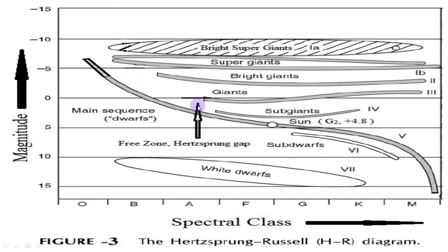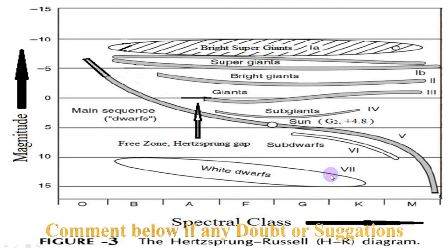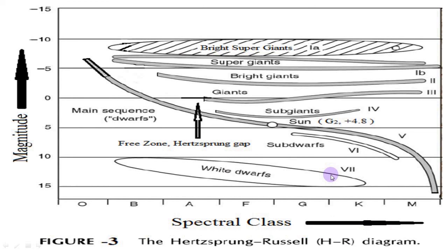There is a region in the diagram between the giant branch and the main sequence that is almost free from stars. This is known as the Hertzsprung gap. So this is all about the HR diagram. Hope you enjoyed the spectral classification of stars. If you have any suggestions or doubts, write in the comment section and we will try to resolve your doubts as soon as possible. Thanks for watching this video.